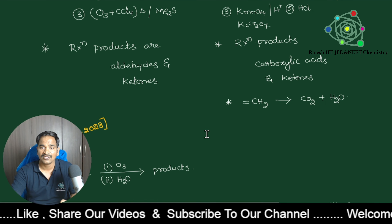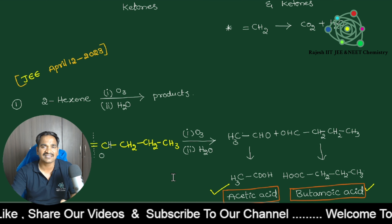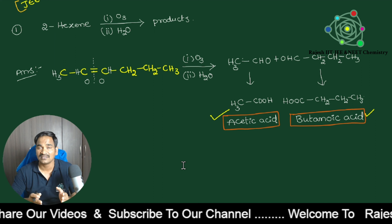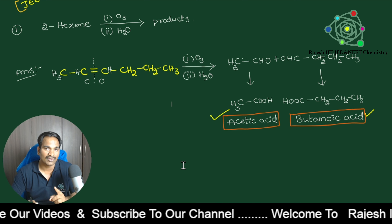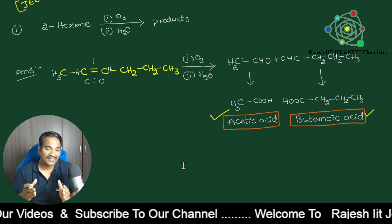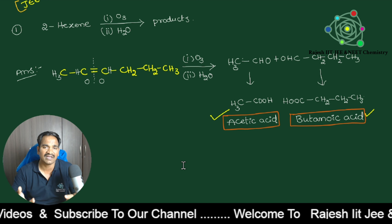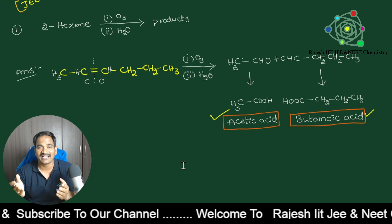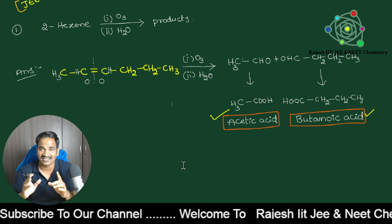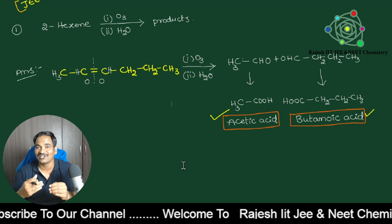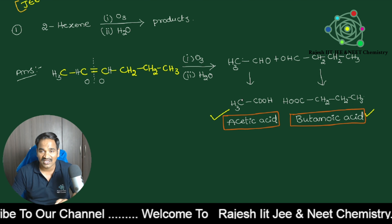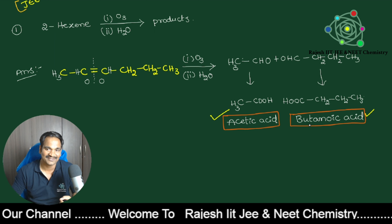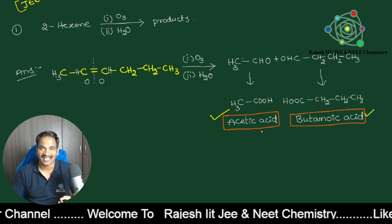Now let's solve a question from JEE 2023 April session. They are asking: 2-hexyne treated with ozone and water — what are the products? Since ozone and water are given with no metal, this is oxidative ozonolysis. Cut the double bond, write one oxygen on each side — generally we get aldehydes, but in oxidative ozonolysis aldehydes convert into carboxylic acids. Therefore the final products are acetic acid and butanoic acid. Thanks for watching, bye bye.